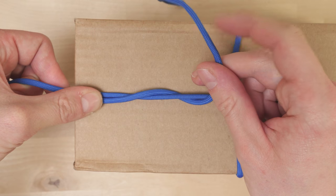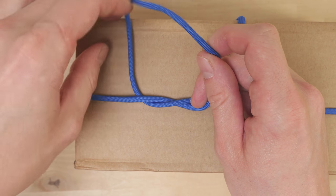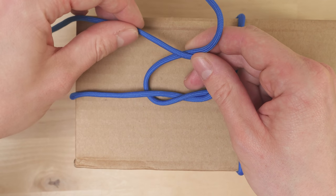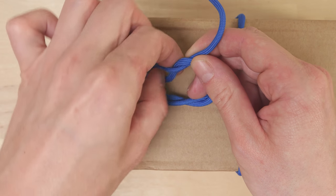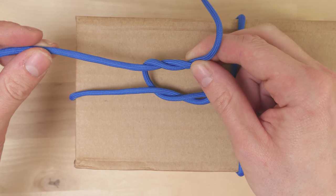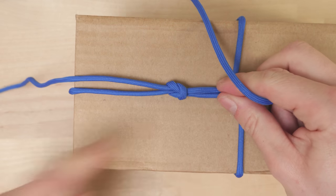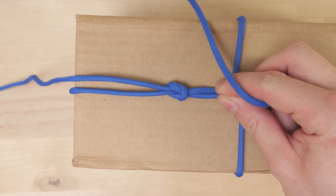Then using our right strand, we go over the left strand. Then again do a wrap around like this and tighten up. And what you get is a nice looking reef knot.